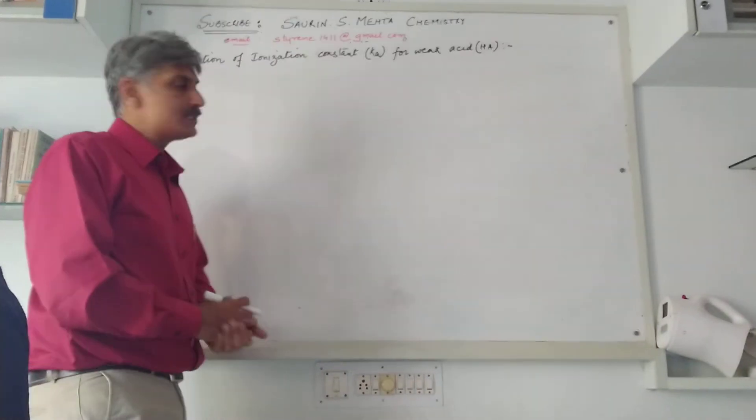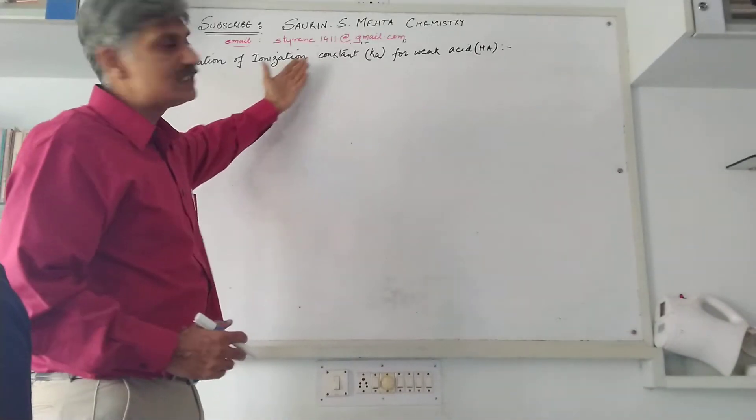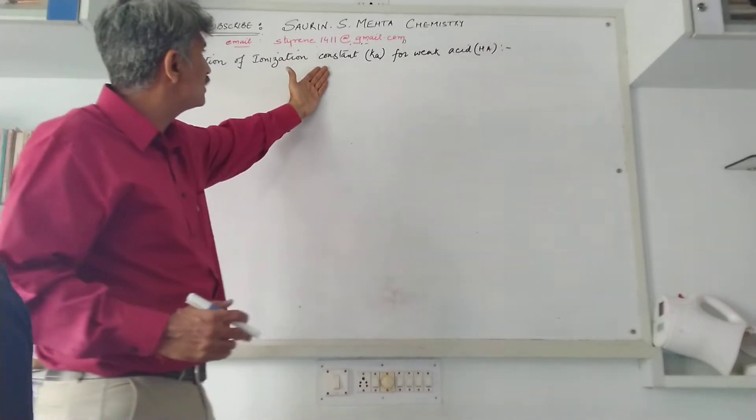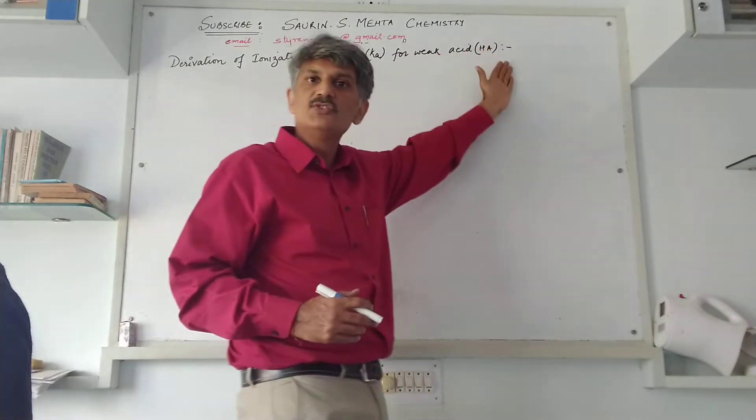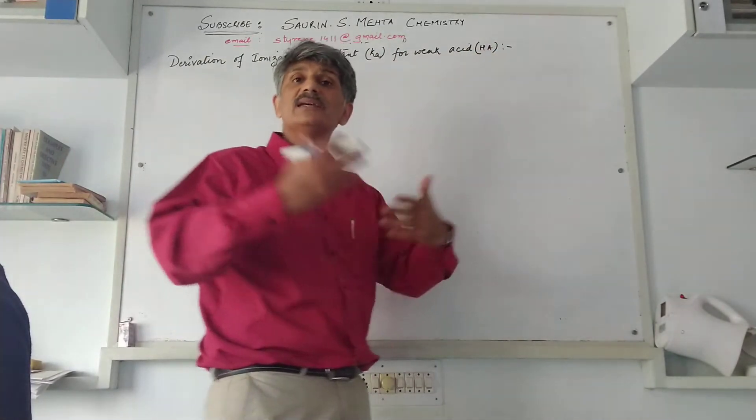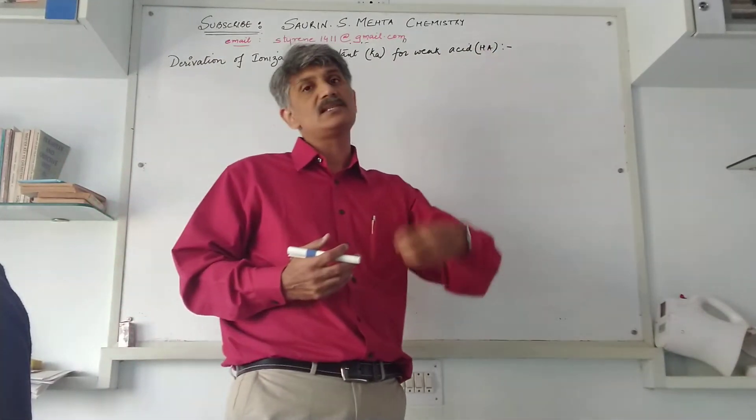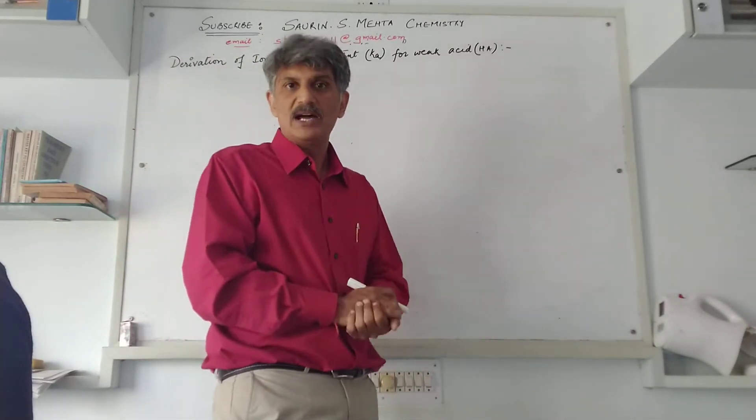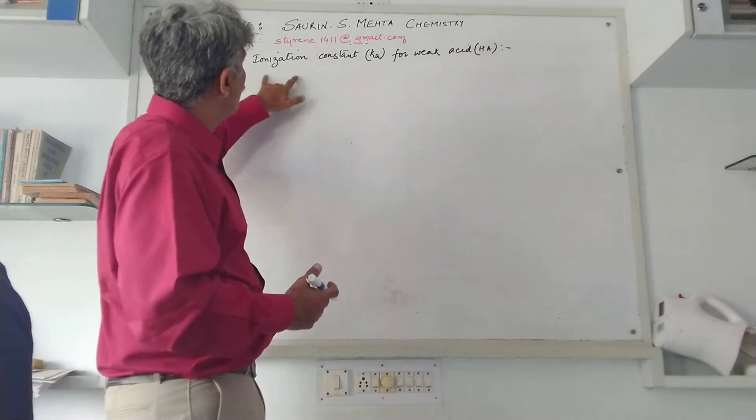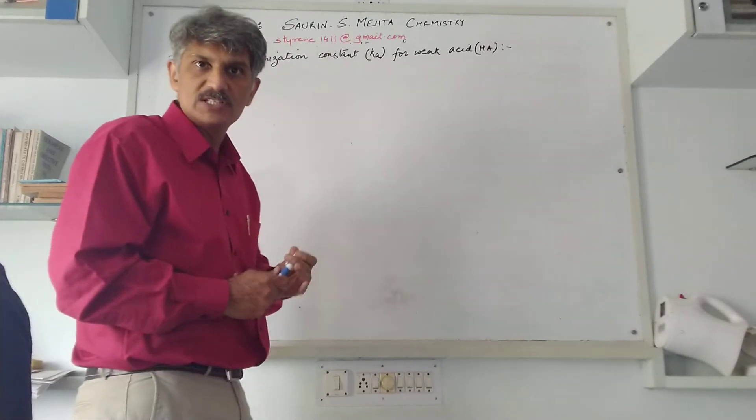Now what we are going to take is the derivation of ionization constant. Ionization constant for weak acid is Ka, and weak acid in general is HA. You can take any weak acid like acetic acid, formic acid, benzoic acid - any weak acid which ionizes partially.